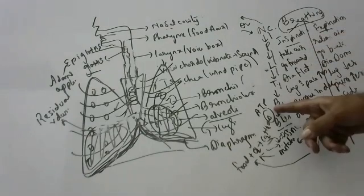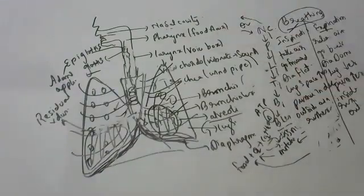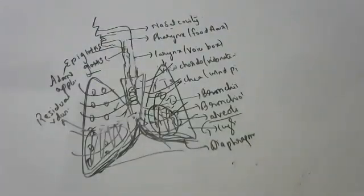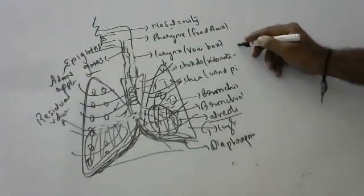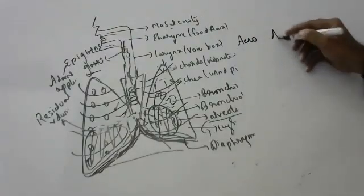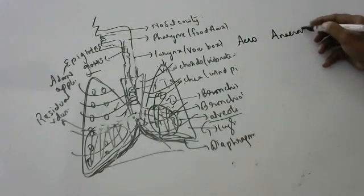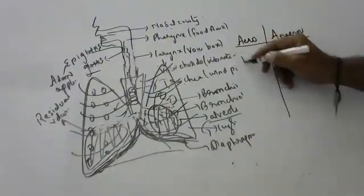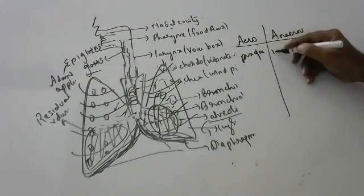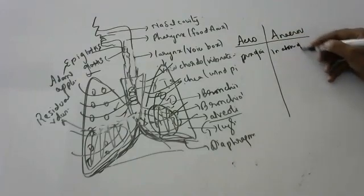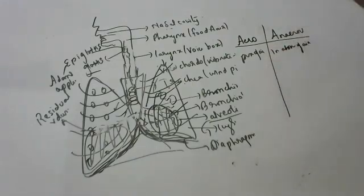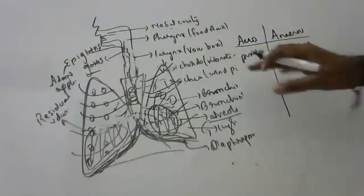Respiration is of two types: aerobic and anaerobic. Aerobic means in the presence of air; anaerobic means in the absence of air. Aerobic respiration releases 38 ATP — a lot of energy. Anaerobic respiration releases only 3 ATP. I will discuss aerobic and anaerobic respiration in detail in a separate video.